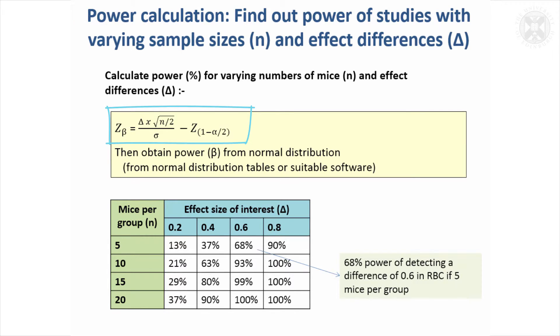Using the formulae rearranged in terms of power, we'll look at that for both different numbers of mice per group and different effect sizes. If we're interested in an effect size of 0.6 in red blood cell counts and vary the number of mice per group, you can see what the power of the study would be.